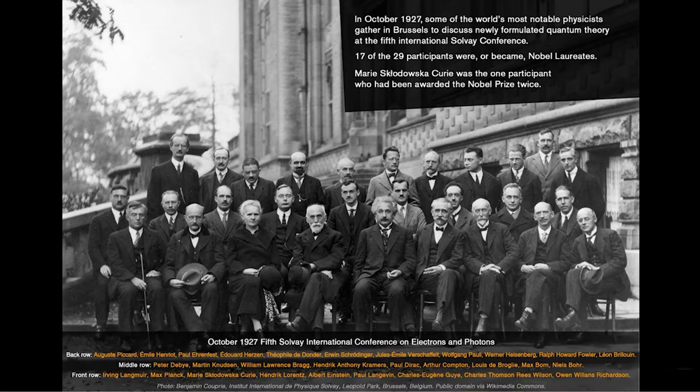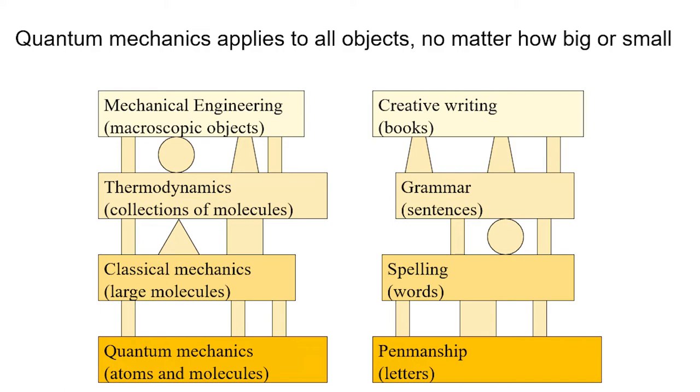Quantum mechanics is universally applicable. It applies to all objects, no matter how big or small. But for large objects, its effects are really not very obvious. So quantum mechanics, at the base of these chains, applies to atoms and molecules. It also applies to large molecules, and collections of molecules, and big objects, but just at such a level that we'll never notice it.